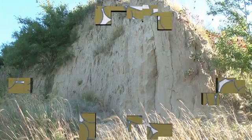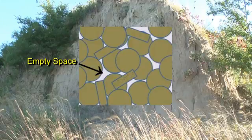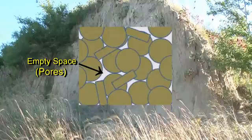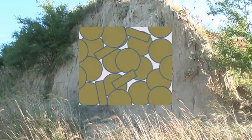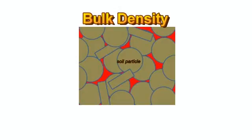We know that soil is made up of solid particles that have different shapes and sizes. And in between these particles, there is empty space, and that empty space we call pores. So the first thing you need to remember about bulk density is that the volume of the sample includes both the soil particles and the pore space between the soil particles.